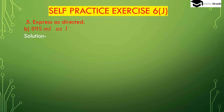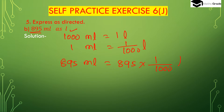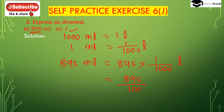Now question number 2nd, bit (b): express 895 ml as liter. We have to convert 895 ml to liter. We know 1000 ml is 1 liter, so 1 ml will be 1 divided by 1000 liter. So 895 ml will be 895 multiplied by 1 divided by 1000 liter, which is 895 divided by 1000 liter. The denominator 1000 has 3 zeros.